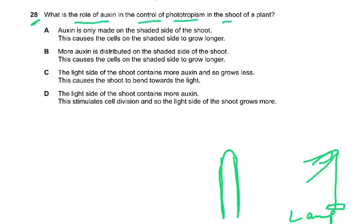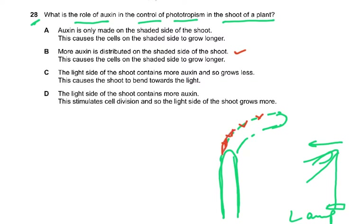Question 28: what is the role of auxin in the control of phototropism in the shoot of a plant? If the light source comes from one direction, the shoot grows towards the light. More auxin is distributed on the shaded side of the shoot, causing cells on the shaded side to grow longer. So the answer is B.